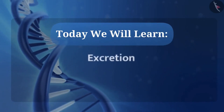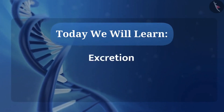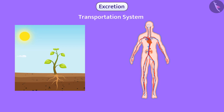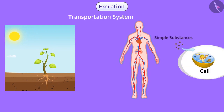In this video we will learn about excretion. In the previous video we learned that oxygen and nutrients are transported to every cell of the body with the help of the transportation system. With the help of these simple substances and oxygen, metabolic reactions take place in the cell.